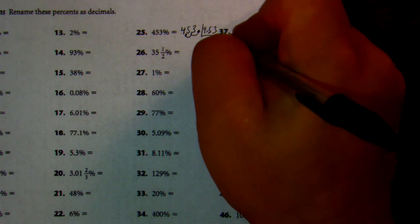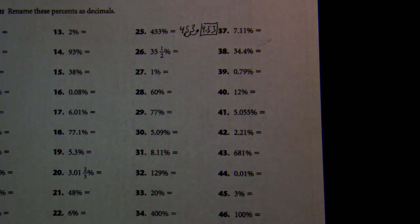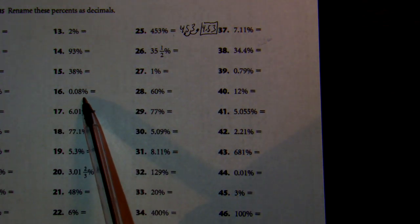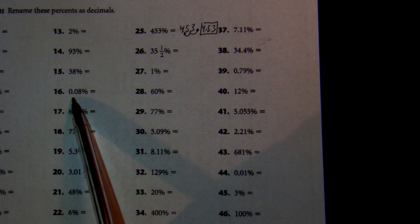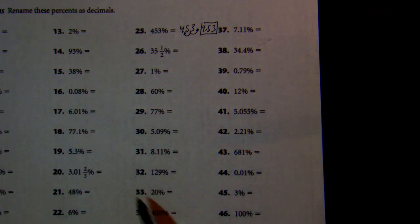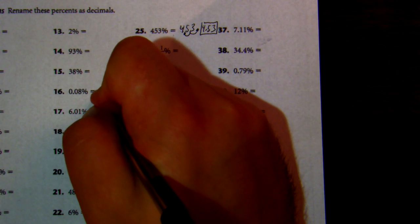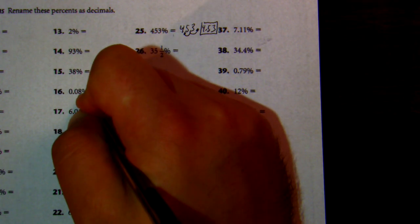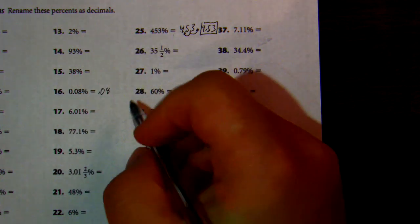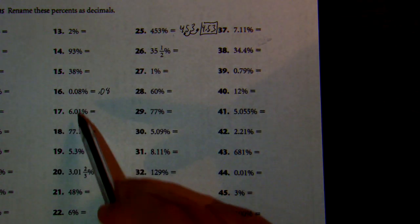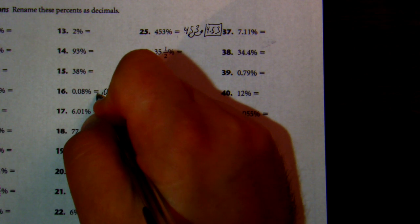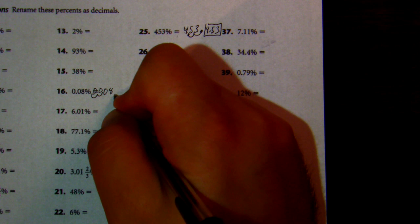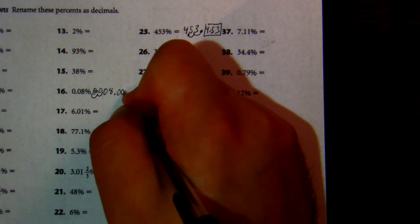Sometimes they'll have a percent that already looks like it was converted to a decimal, like number 16. Well, it's just the same game, guys. 0.08, change that percent—we don't need to change it because we already have the decimal. So we're going to move it to the left twice, so we need two more zeros. So we're at 0.0008.